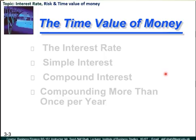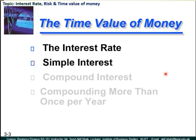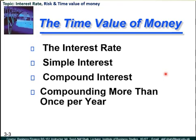In order to understand the topic — time value of money — we need to understand 4 basic points. First, what is interest rate? It is really important to understand the time value of money concept. There are 2 types of interest rate: one is known as simple interest rate, and the other one most commonly used is compound interest rate, used by banking institutions and different credit agencies. Fourth, compounding more than once per year. We will shortly discuss these points one by one.